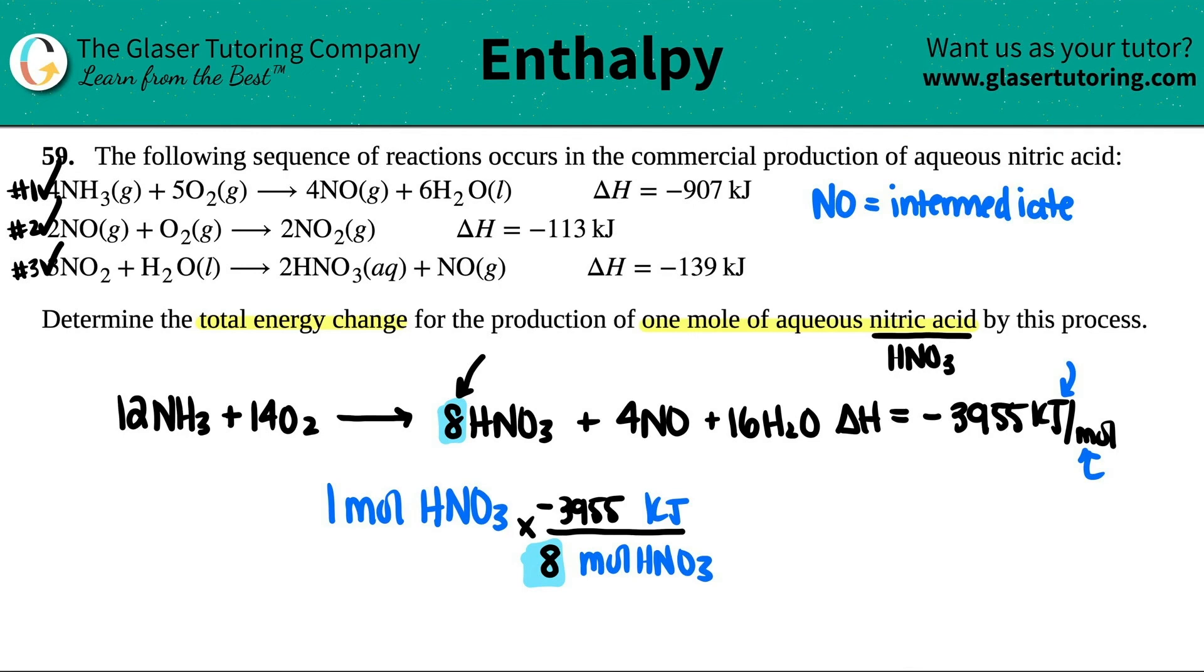But if I was looking for NO, I would put a four down here. So it's going to change. Just be careful. Cancel this out. Basically what we just have to do is 3955 divided by eight. And I got 494.4. There's a negative here. And this is now kilojoules.